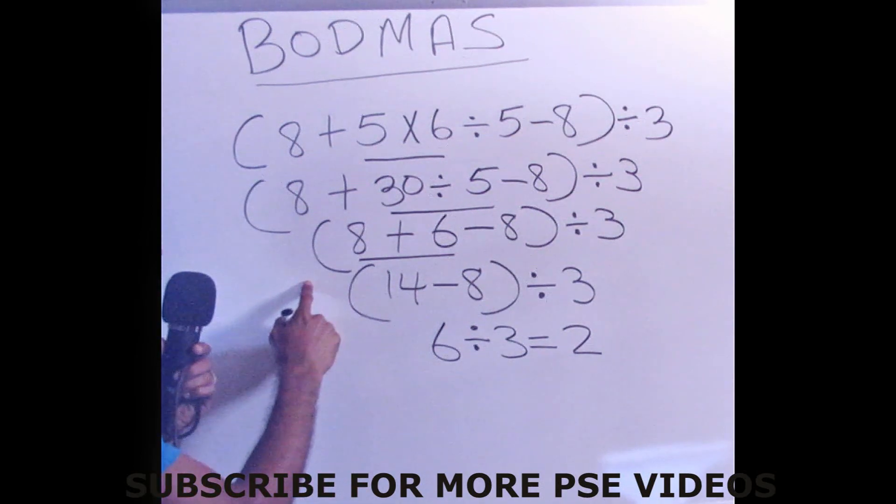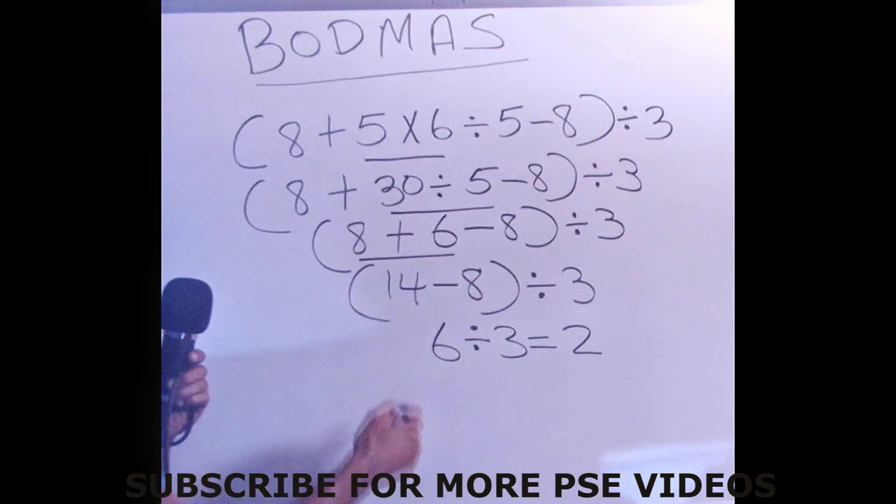So we continue to work what is in bracket. 8 plus 6 is 14. Bring down your minus 8. And 14 minus 8 is 6. Divided by 3, which is equal to 2.